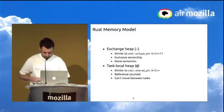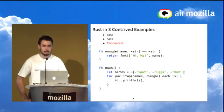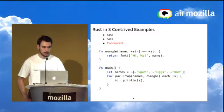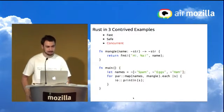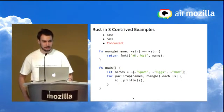Question: on the last slide, there's an exclamation point on the end of 'format' — what does that mean? Format is actually a macro. The macro gives us, unlike printf in C, typesafe formatting. It can actually check that, for example, the %f corresponds to the parameter name and that the types match up. So the exclamation mark means macro.